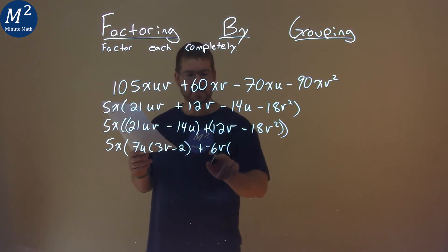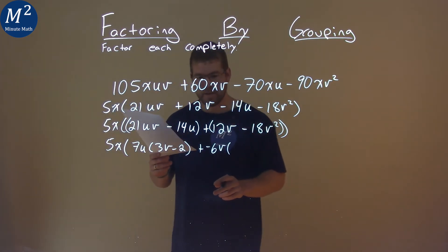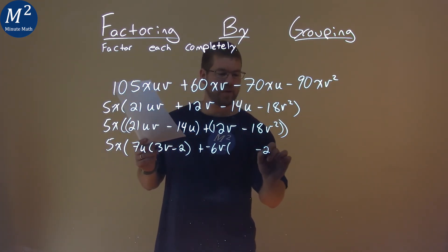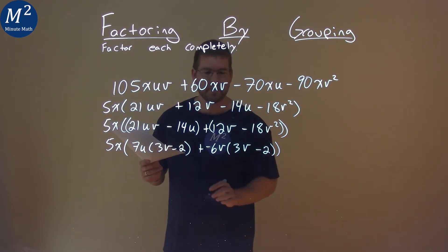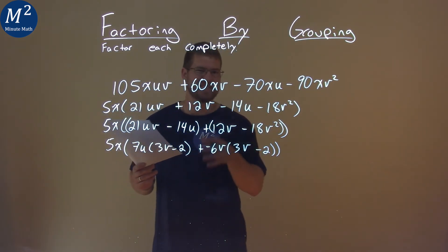Well, negative 6V out of 12V is just negative 2. So I'm going to put that right here. Negative 6V out of negative 18V squared is a positive 3V. And the more you do this, you get better at kind of seeing that.